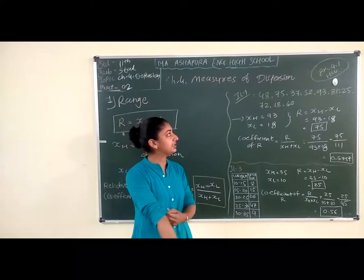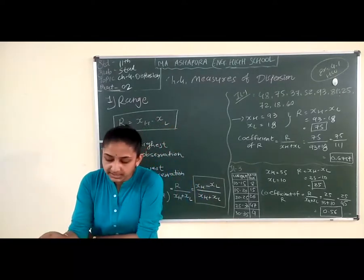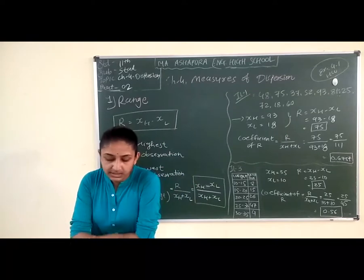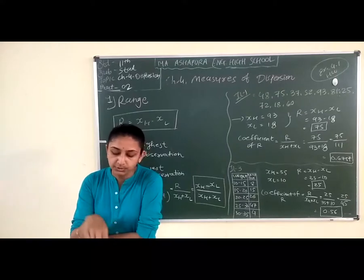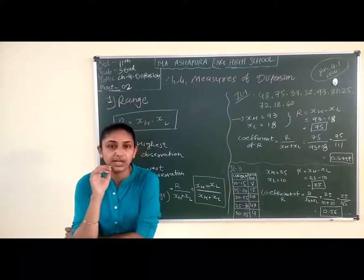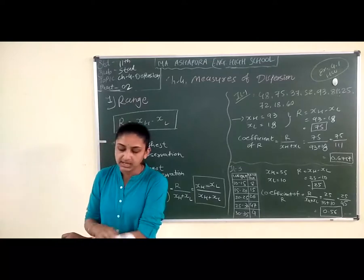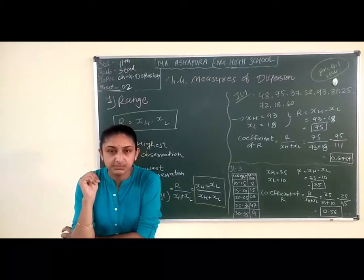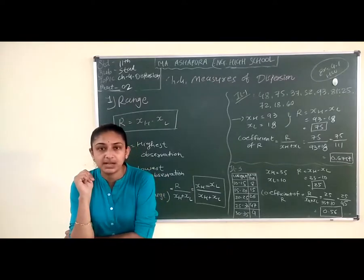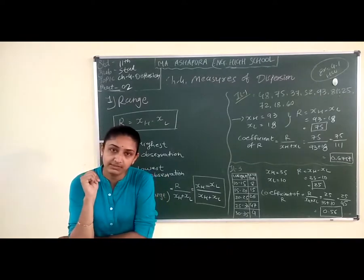Exercise number 4.1 covers the range topic. Illustration numbers 2 and 4 from that exercise are assigned. In the next video, we will talk about Quartile Deviation, which is another measure of dispersion. Take care and have a nice day.